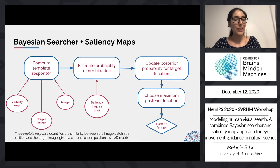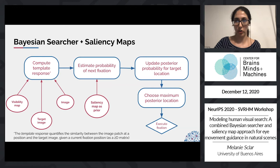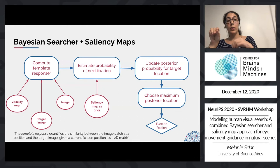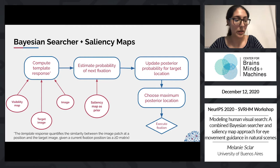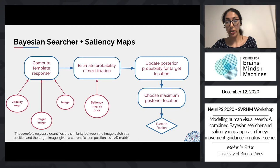This is a top-level schema of how IBS and our modifications work. First, we compute the template response, which quantifies the similarity between the image patch at a position and the target image given a current fixation position — essentially, if I'm looking at position I, how similar does position J look to the target, accounting for distance and visibility. Once we have this, we estimate the probability of the next fixation, update the posterior probability for target location, choose the maximum posterior location, and execute the saccade to that position.